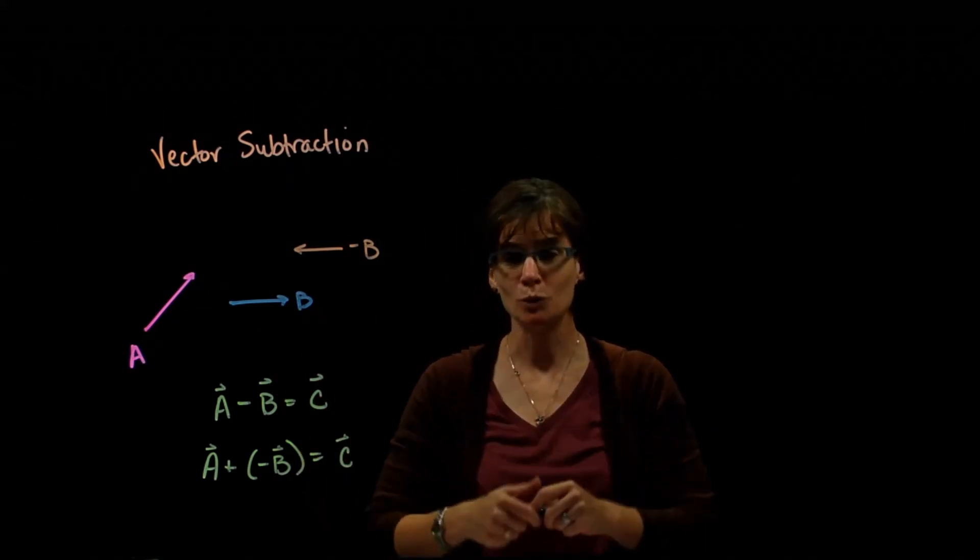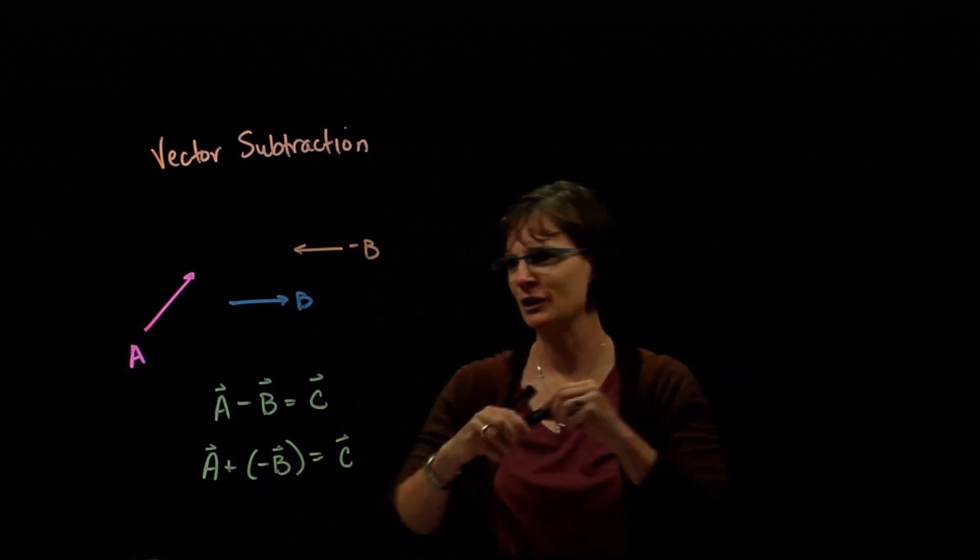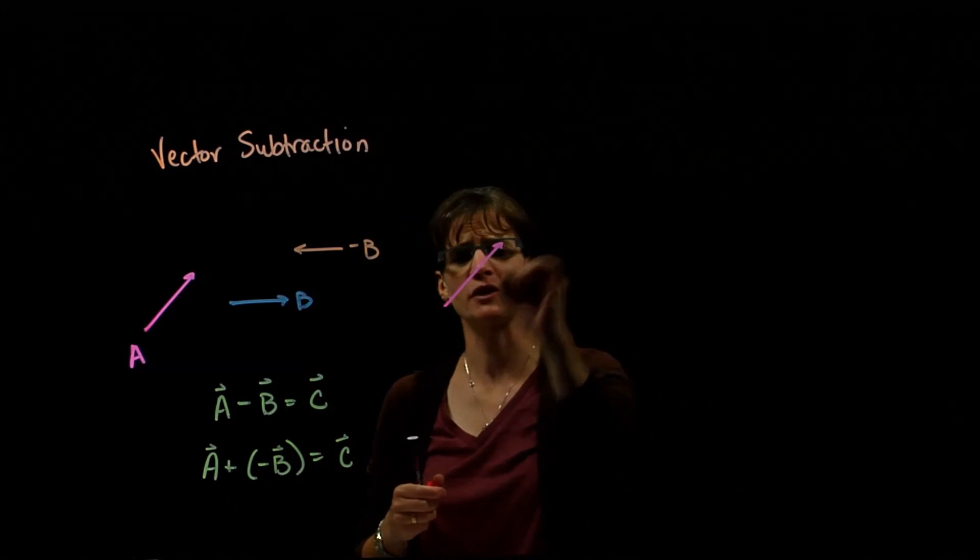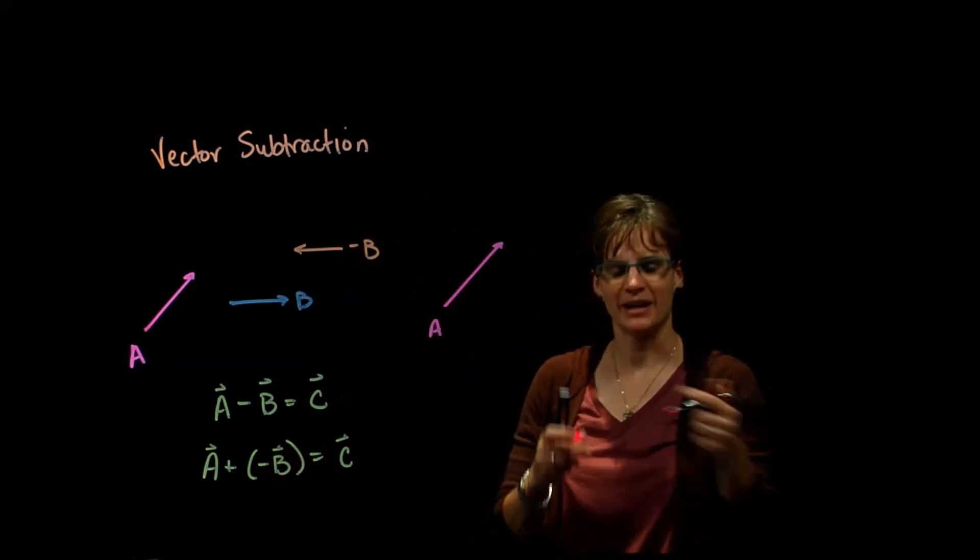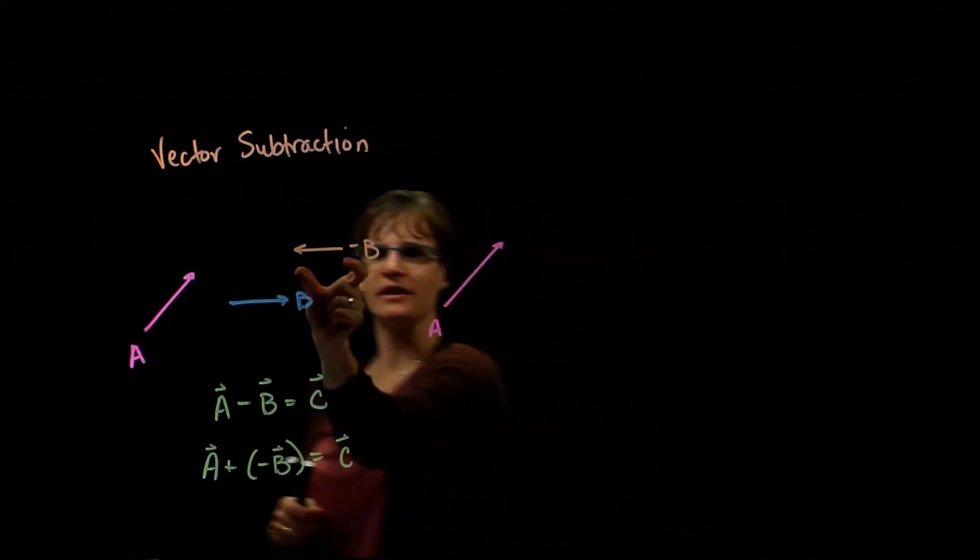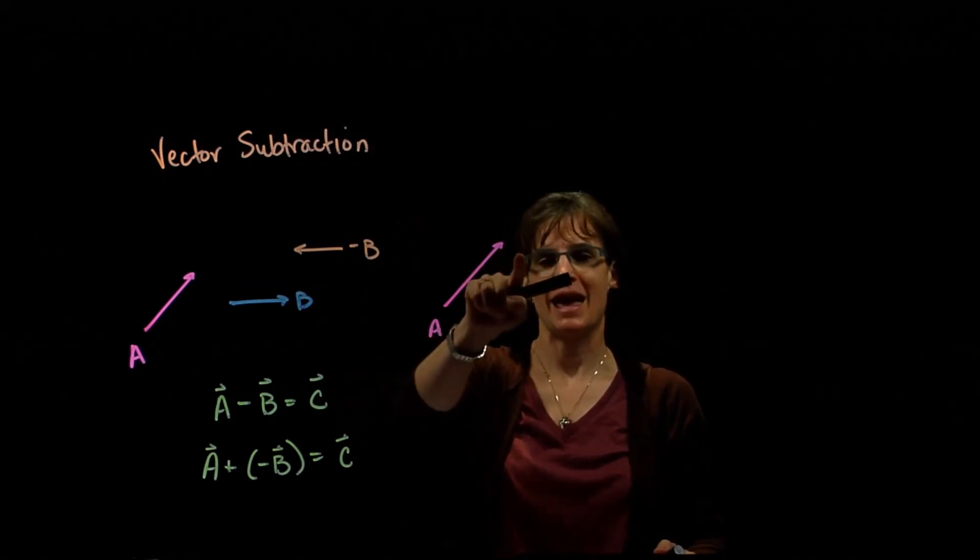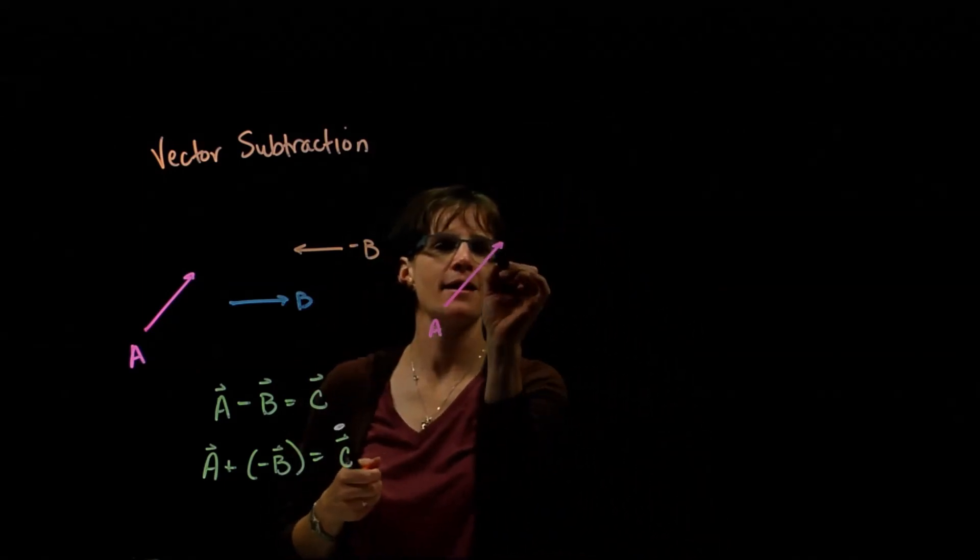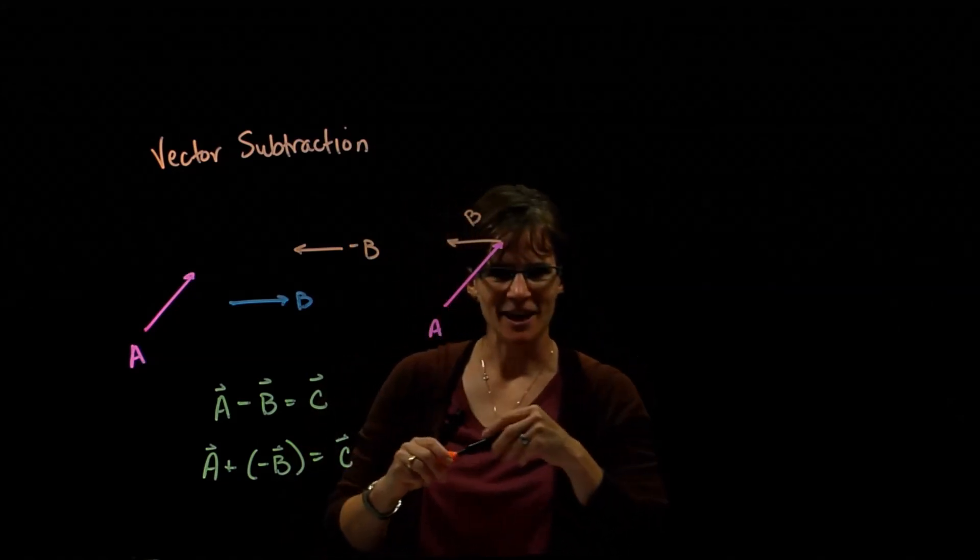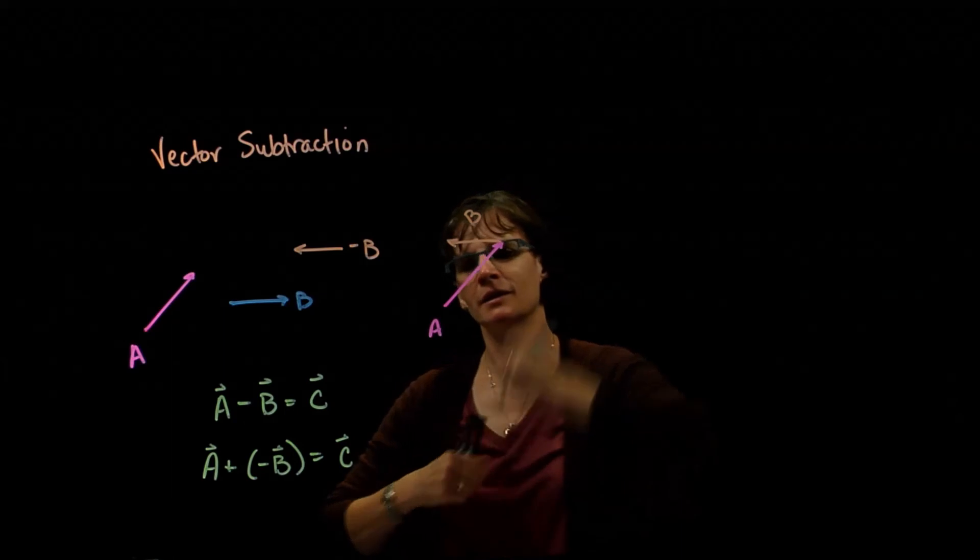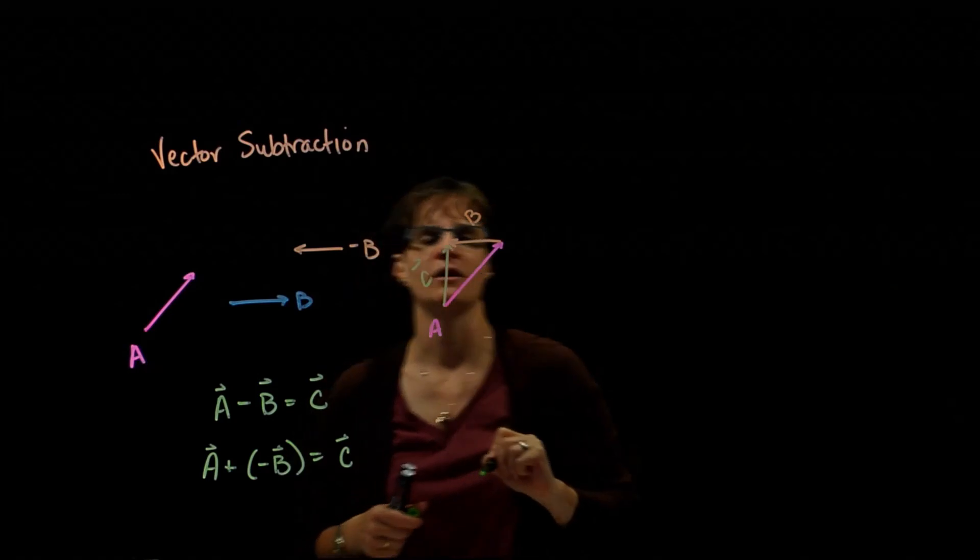Then I can just use my rules of vector addition. So I'm going to shift both vectors over for a little bit more room. So here was my vector A. Now I'm going to add to that the negative vector B. So I take negative vector B. I take the tail of negative B to the head of vector A. There it is. So here's B. And I draw my resultant vector from the tail of A to the head of B.